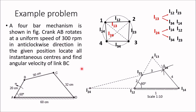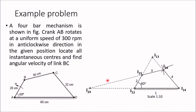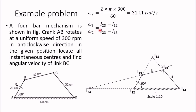Now determine the angular velocity of link BC, which is link 3. Angular velocity of link 2 (AB) is given as 300 rpm. First, calculate ω2 = 2πN/60 = 2π×300/60 = 31.41 rad/s. Using the formula ω3/ω2 = (distance I23 to I12) / (distance I23 to I13), measure I23 to I12 as 2 cm and I23 to I13 as 2.8 cm.